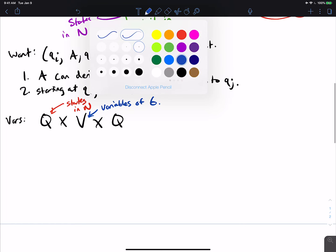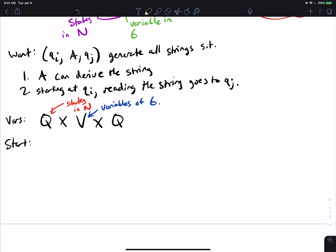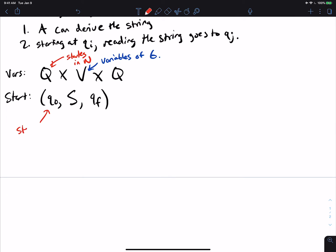Cool, so then the start variable is going to be Q0 and then the second coordinate will be the start variable of the original grammar. And then the final state, the third thing in the triplet will be the single final state in the DFA. So this is the start, I should say NFA. So start state of NFA N, this is the final, the only final state of N. And the S in the middle is the start variable of G, of the grammar G.